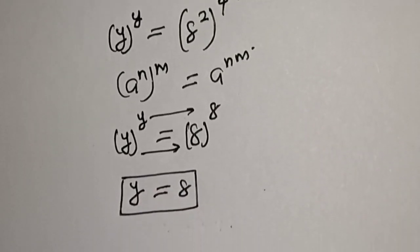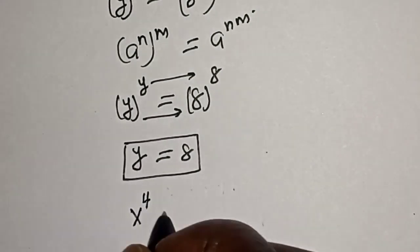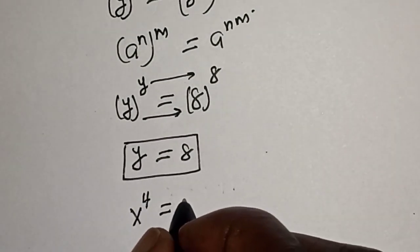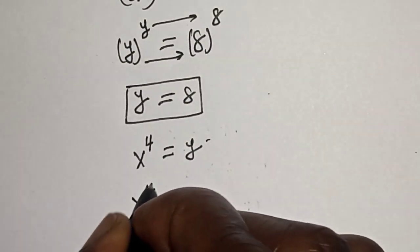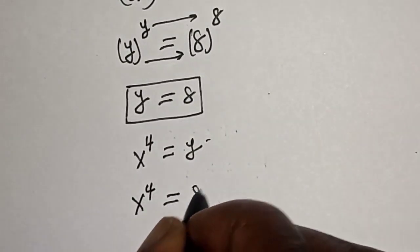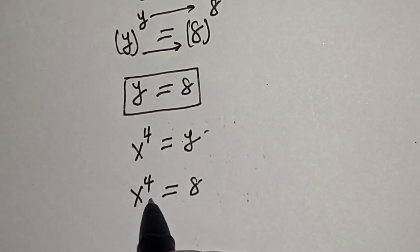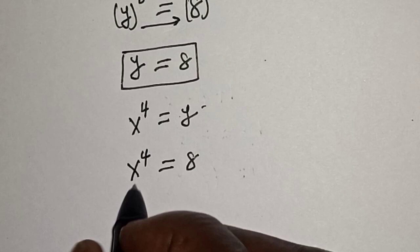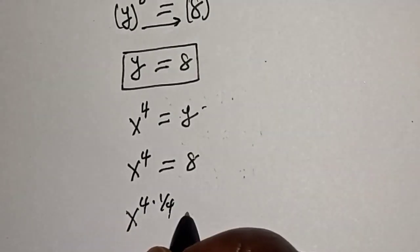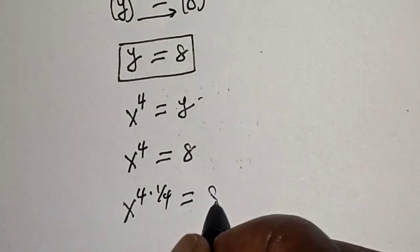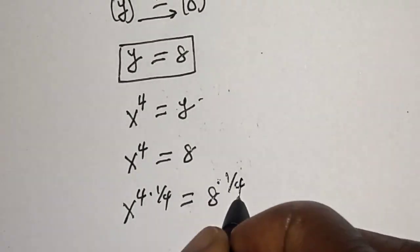But recall that s raised to power 4 is equal to y. Therefore, s raised to power 4 is equal to h. Now, let's multiply the power of both sides by 1 over 4. That is, s raised to power 4 multiplied by 1 over 4 is equal to h multiplied by 1 over 4.